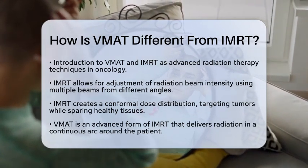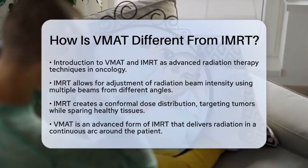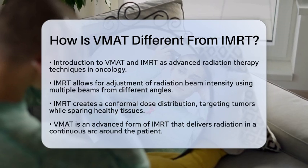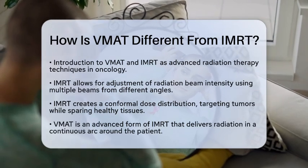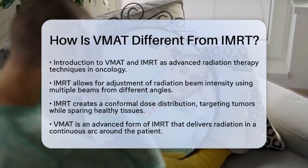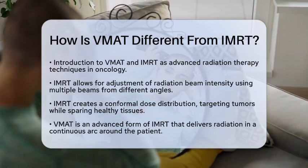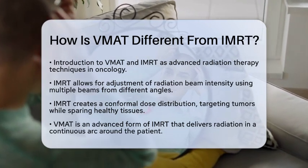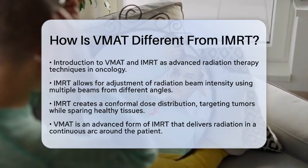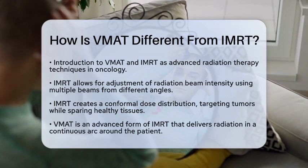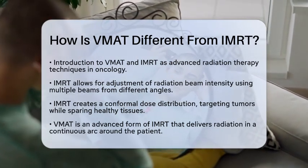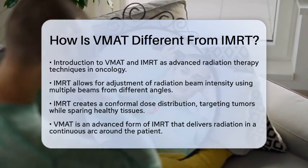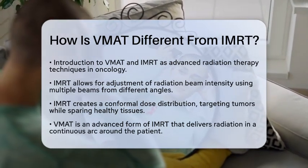IEMRT is a technique that allows doctors to adjust the intensity of radiation beams. It uses multiple beams directed from different angles, each with its own intensity. This helps to create a highly conformal dose distribution, meaning the radiation can be precisely targeted to the tumor while sparing surrounding healthy tissues.